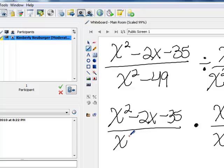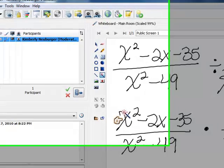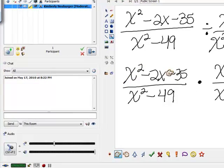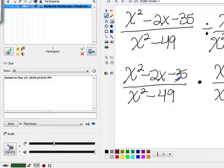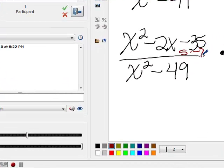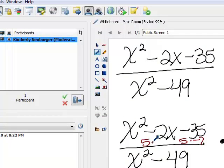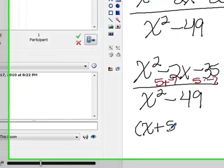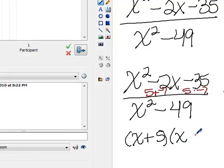And now what we need to do is go through each of our sections and factor them. So we're going to start with the numerator of the first expression. I notice it's got three terms, and our leading coefficient is 1. So I'm going to look at the negative 35 and see how I could come up with a negative 2 in the middle. I notice that 5 times negative 7 is negative 35, and 5 plus negative 7 is negative 2. So the numerator factors into x plus 5 times x minus 7.